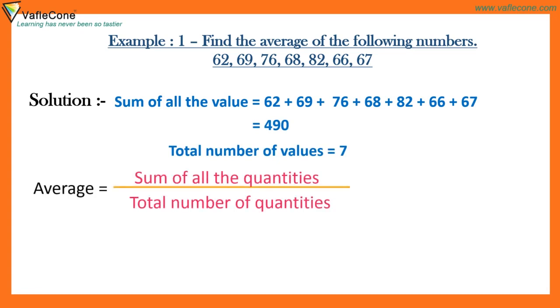Average equals sum of all the quantities divided by total number of quantities, which is 490 by 7, equals 70. So answer is 70.